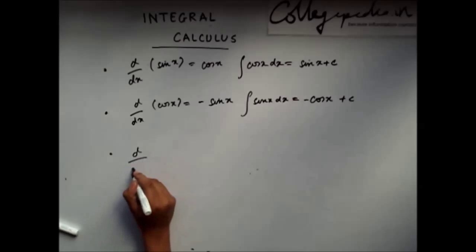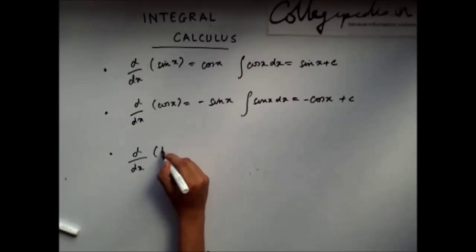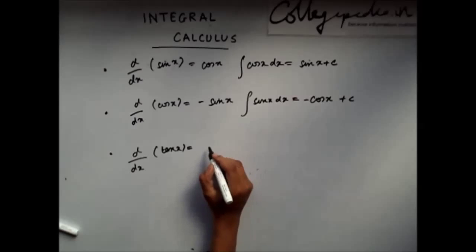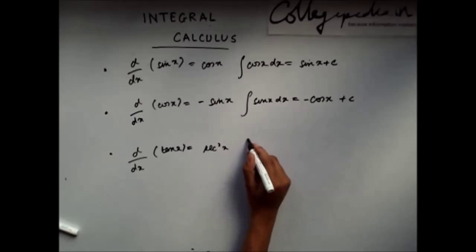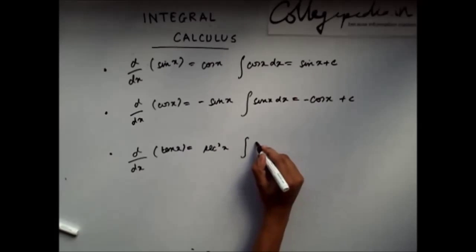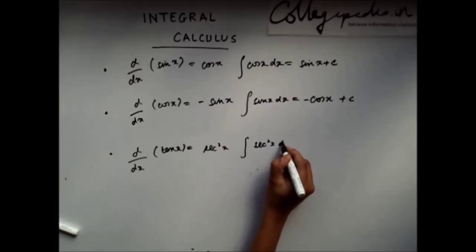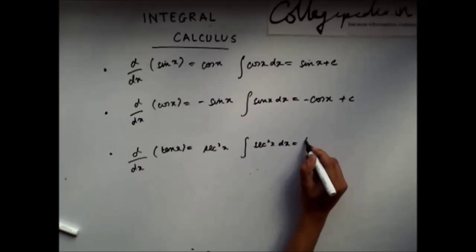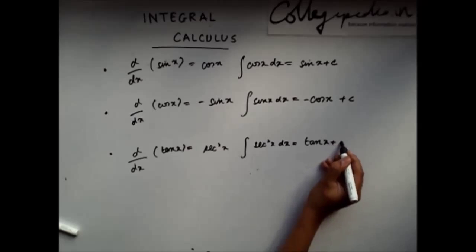Similarly, the derivative of tan x is sec squared x. So, if I integrate sec squared x dx, I will get tan x plus C.